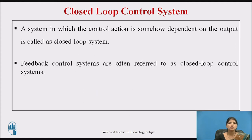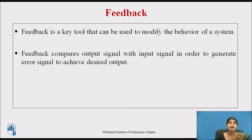We will now discuss the closed loop control system. A system in which the control action is somehow dependent on the output is called a closed loop system. In a closed loop system, feedback is required, and feedback control systems are referred to as closed loop systems. Feedback is a key tool used to modify the behavior of the system. It compares the output signal with the input signal in order to generate an error signal, with the help of which we achieve the desired output and reduce the error.